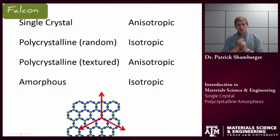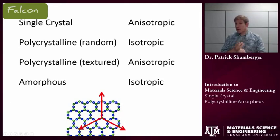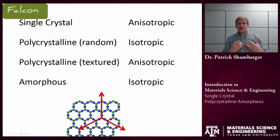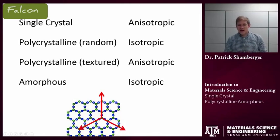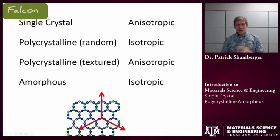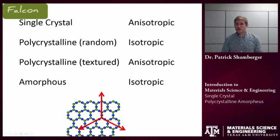In summary: single crystals are always going to be anisotropic. Polycrystalline materials that are randomly oriented are isotropic, but once we start to manipulate them — by rolling or drawing — we texture them, giving them a preferred orientation, which makes them anisotropic. Amorphous materials that have no long-range order are always going to be isotropic. The other important lesson is that the symmetry of the properties of a material depends on the symmetry of the single crystal itself.